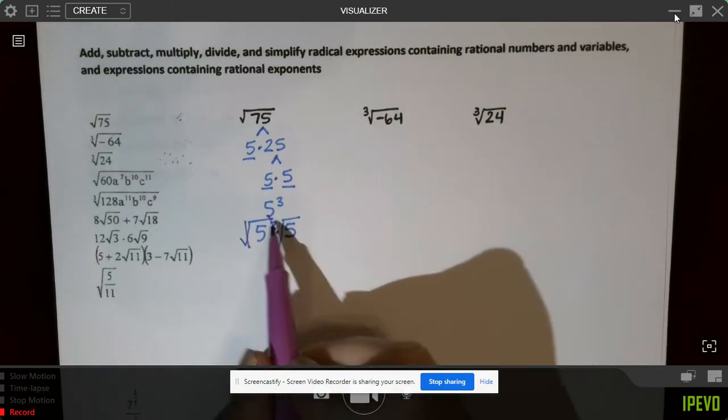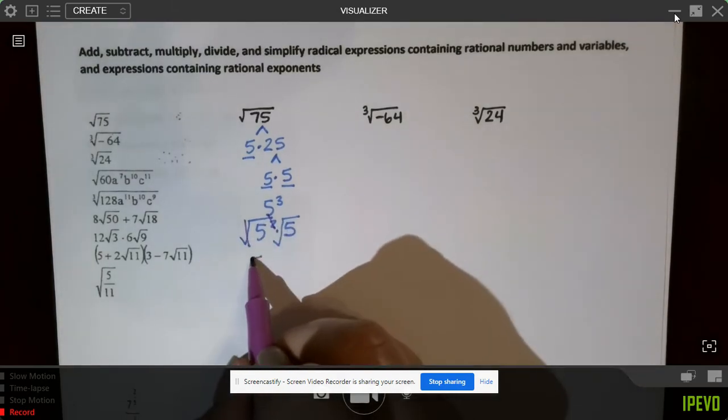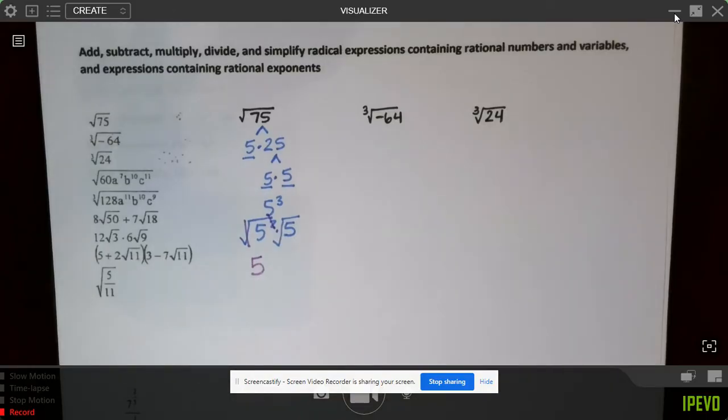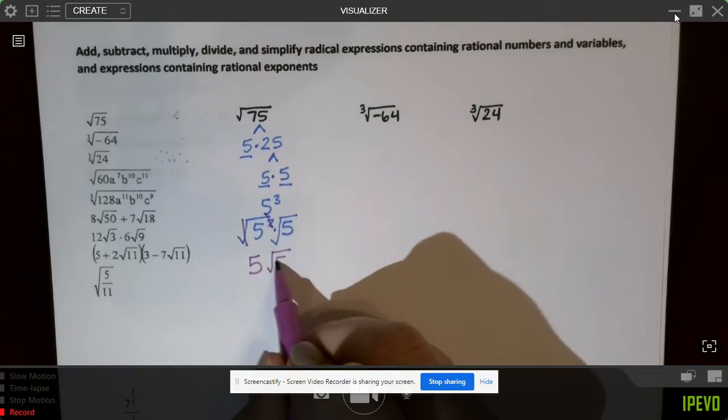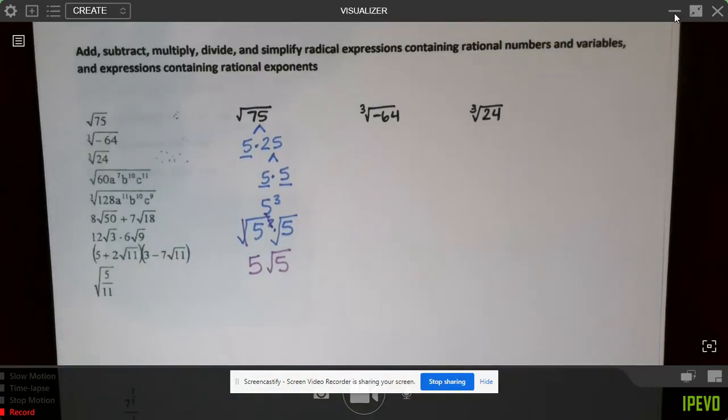And so this 5 squared here cancels out the radical, and you're left with just a 5, but this 5 gets stuck underneath. There's not enough 5s to come out of the radical.